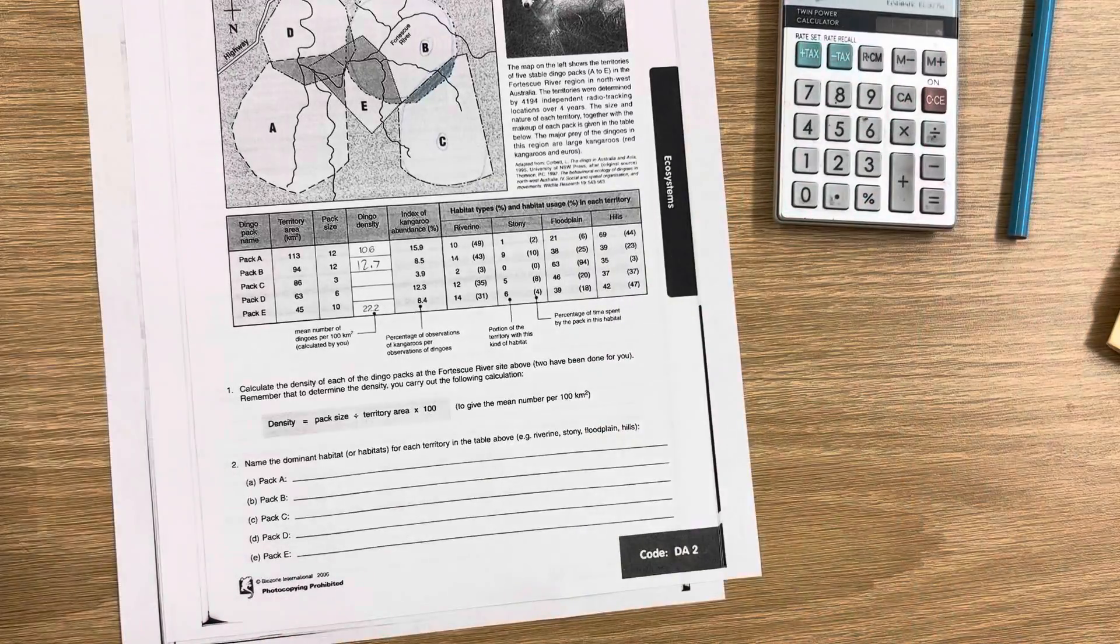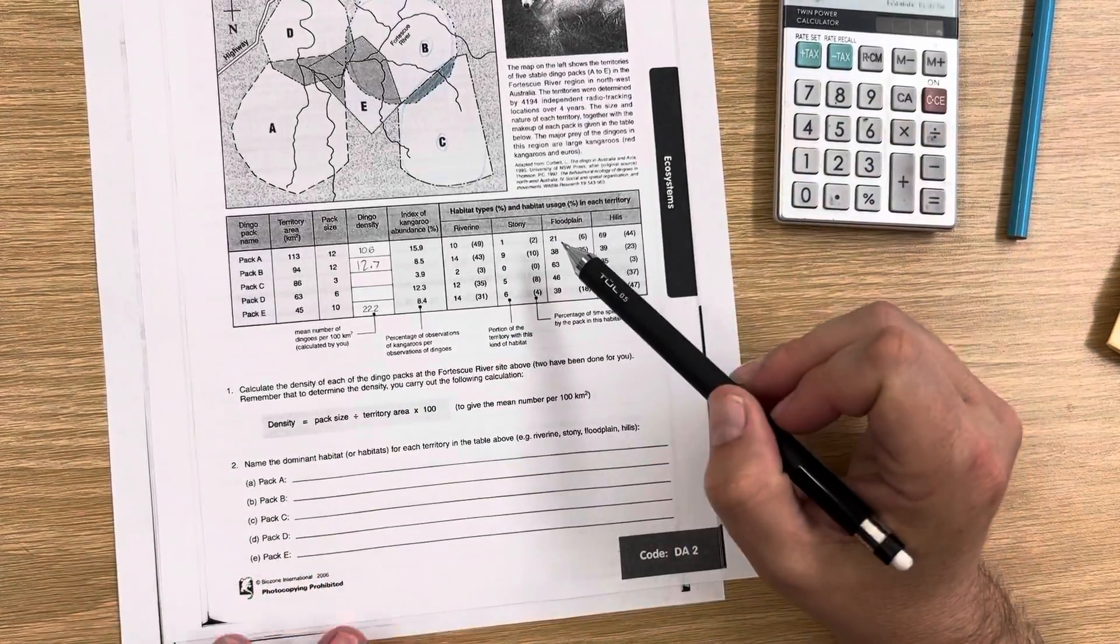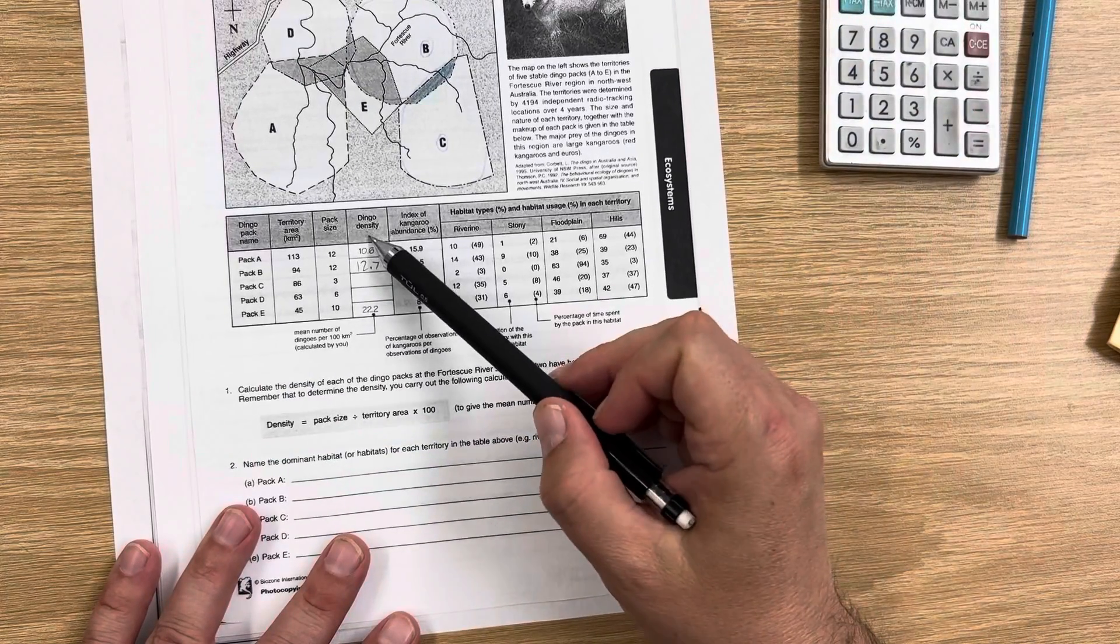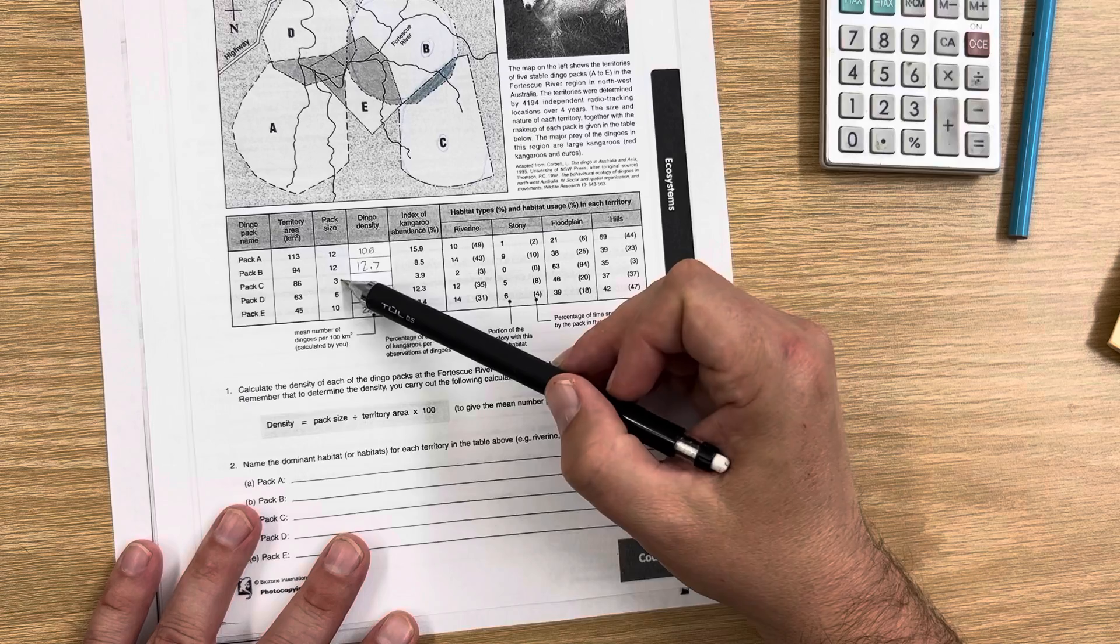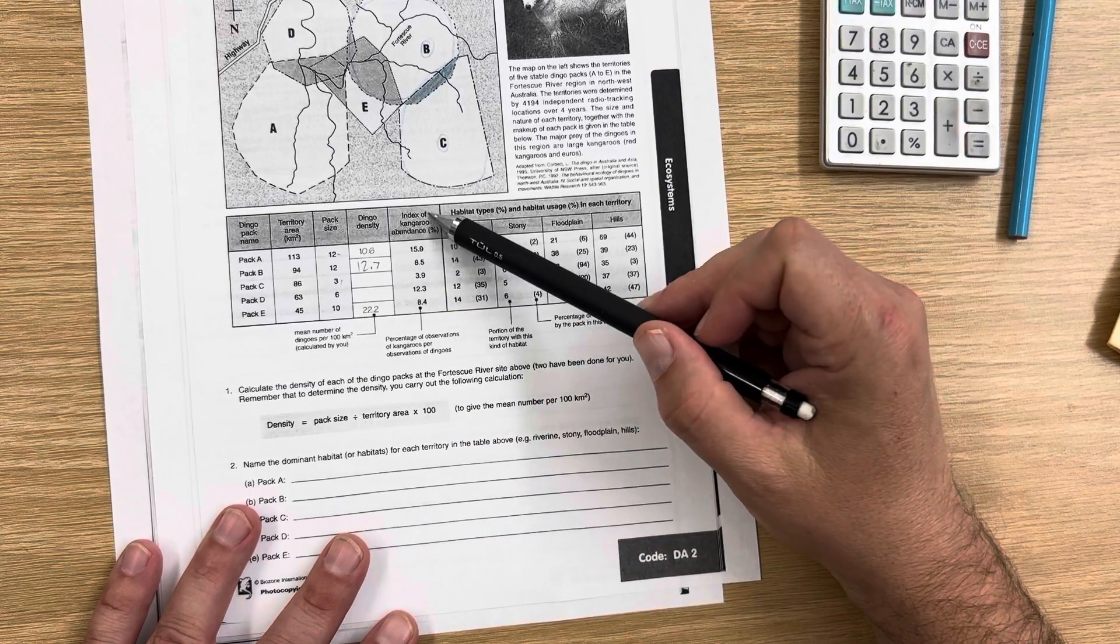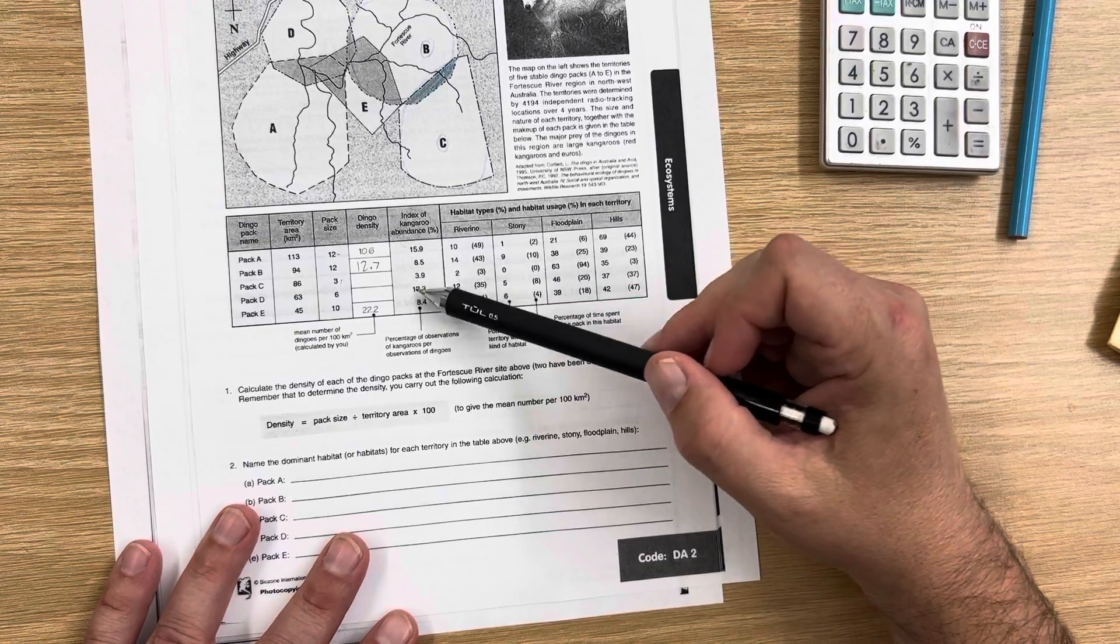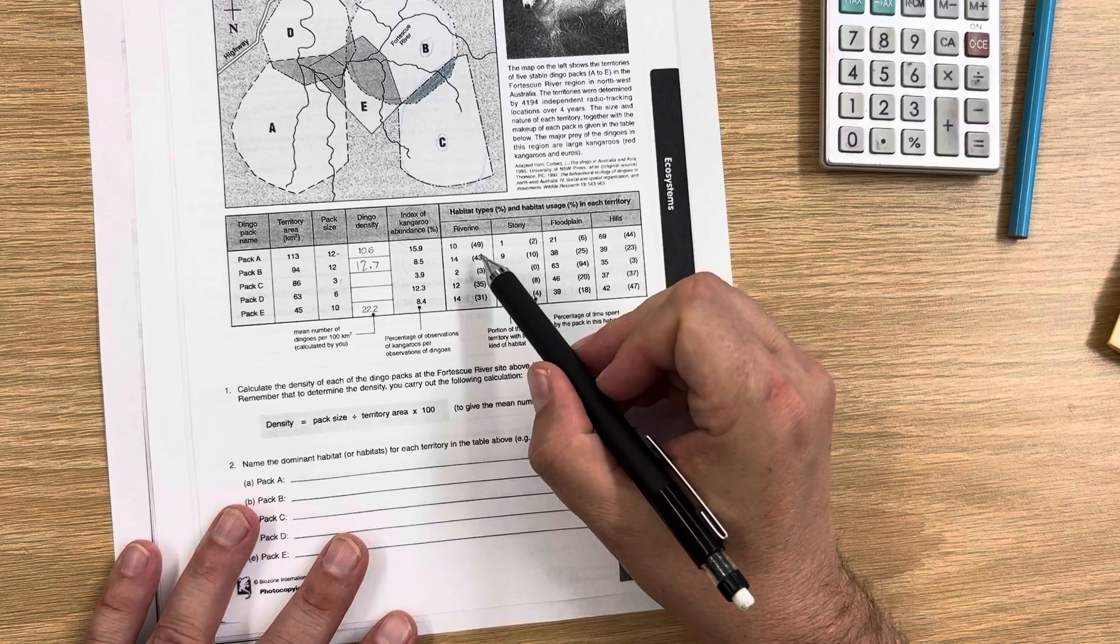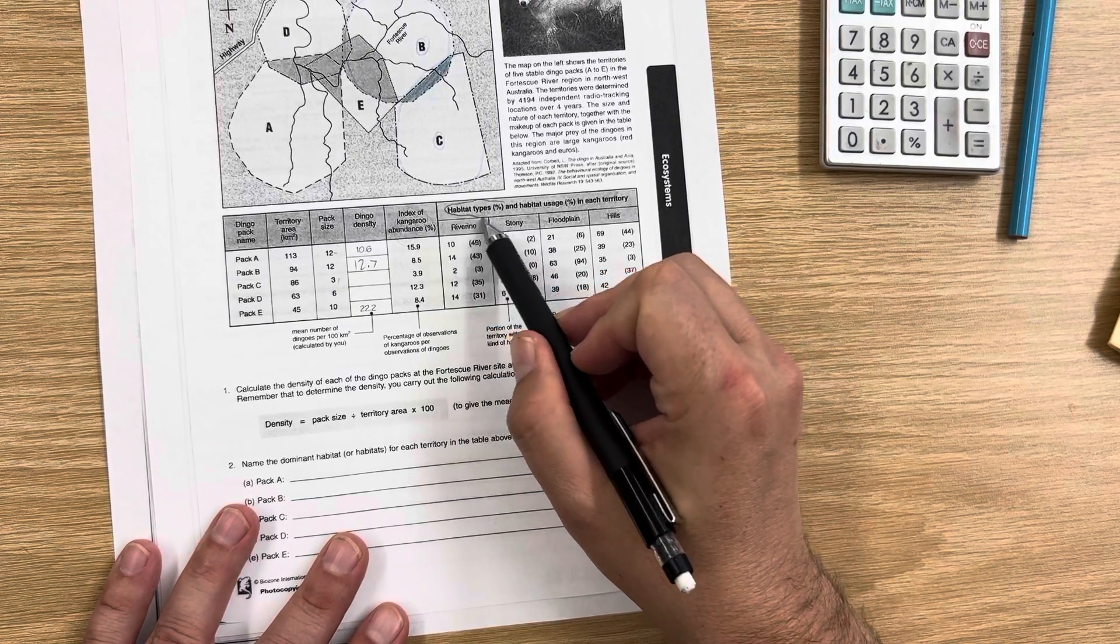Later on, you're going to be reading from this data table and you'll have to find some information. So you've got dingo density, you've got different pack sizes. Some are very small, just three, up to packs the size of 12. This is kangaroo abundance, so how often do you see kangaroos when you see dingoes. And then the types of habitat. Now this is a little confusing to read. It's got two numbers. The first number is habitat type by percentage.